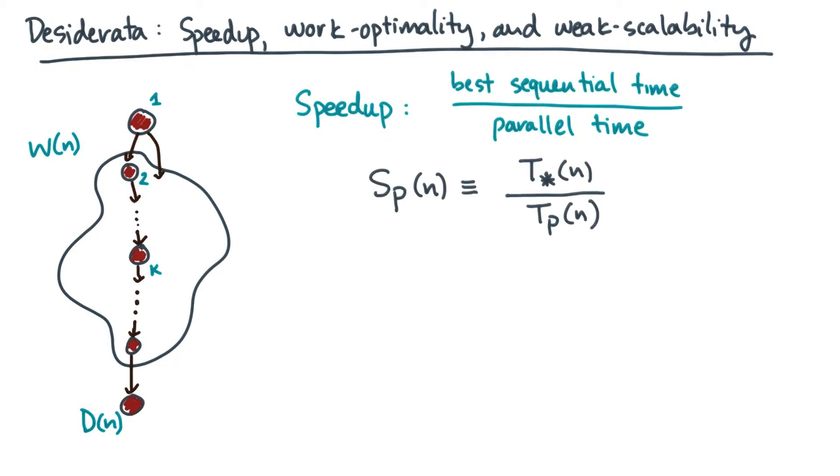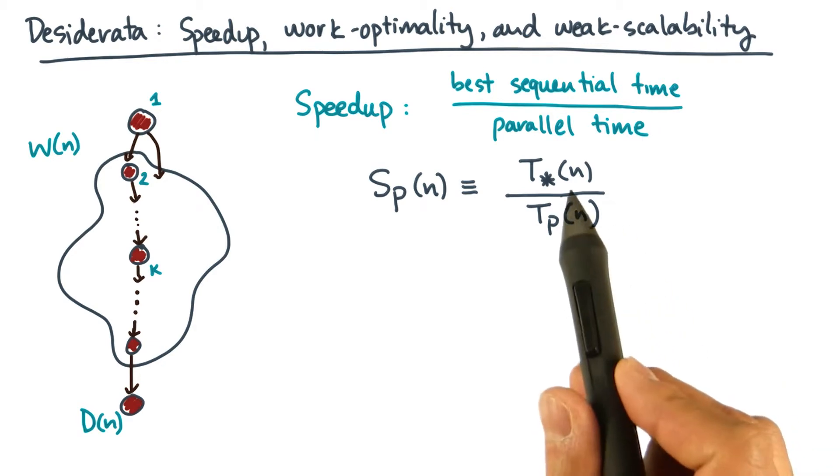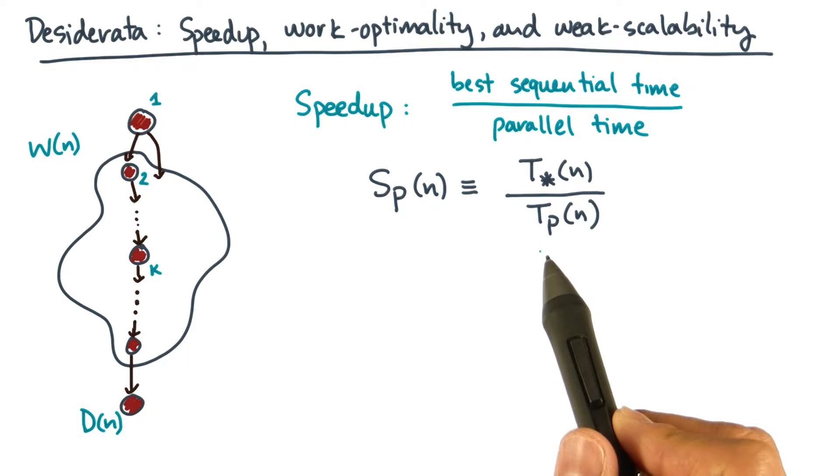Let's use speedup as our metric. Speedup is defined as the best sequential time divided by the parallel time. In terms of symbols, I'll use t star to denote the best sequential time, and of course we'll use Tp(n) to denote the parallel time as before.